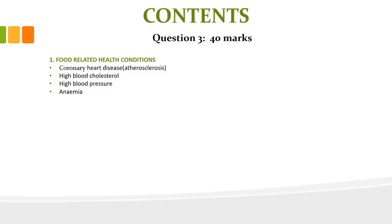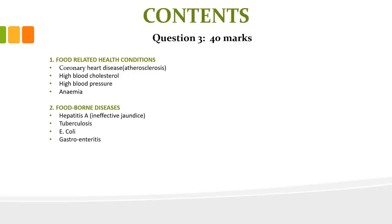Please make sure that if you are working from old past papers and you find questions on osteoporosis, diabetes, anorexia or any other health conditions, you don't confuse yourself into thinking you need to study them. These are the only four food-related health conditions for 2022. For foodborne diseases, some have also been taken out of the curriculum. You only need to know hepatitis A, tuberculosis, E. coli and gastroenteritis.